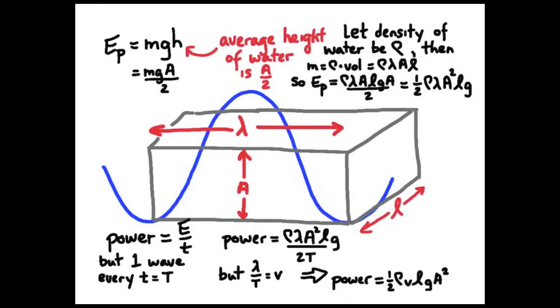Now the L depends upon how long the wave is. The bigger the wave, the more power there is. So we can talk about the power per unit length of wave. So the power per meter of wave front is equal to 1 half rho V G A squared.